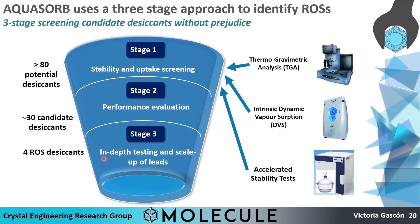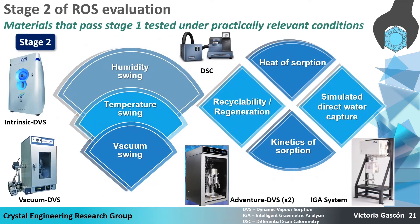The approach we took in Aquasorb was a three-stage approach. It started by looking at 80 potential desiccants, evaluating them for stability and uptake performance. That reduced it to around 30 candidate desiccants, which were subjected to more in-depth performance evaluation. It ended at stage three with four ROS desiccants, each subjected to in-depth testing under real-world conditions and investigation of their scale-up into kilogram or even 50-kilogram quantities. Stage two used vaporsorption instruments to study simulated humidity swings, temperature swings, and vacuum swings, addressing recyclability over many cycles, simulated direct water capture from air, kinetics of absorption, and heat of absorption. My group has assembled 14 sorption instruments to support this project.